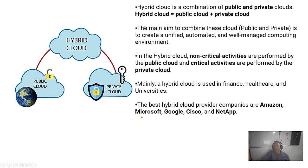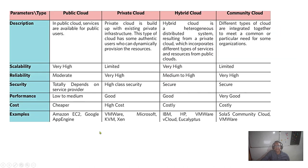The best hybrid cloud provider is definitely Amazon, followed by Microsoft, Google, and Cisco. Comparisons across public, private, hybrid, and community deployment models show public cloud has very high scalability — just add payment and scale quickly. Private and community options are costier. Public cloud is cheaper and is the main highlight for startups.